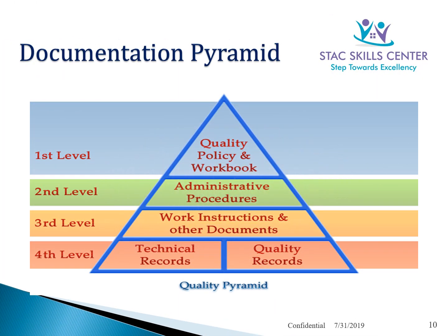This diagram is called the documentation pyramid. At the apex is the base document called the quality policy — every organization has this at the top level. At the second level are administrative procedures or commitment documents such as the site master file, validation master plan, cleaning validation master plan, and other commitment documents.